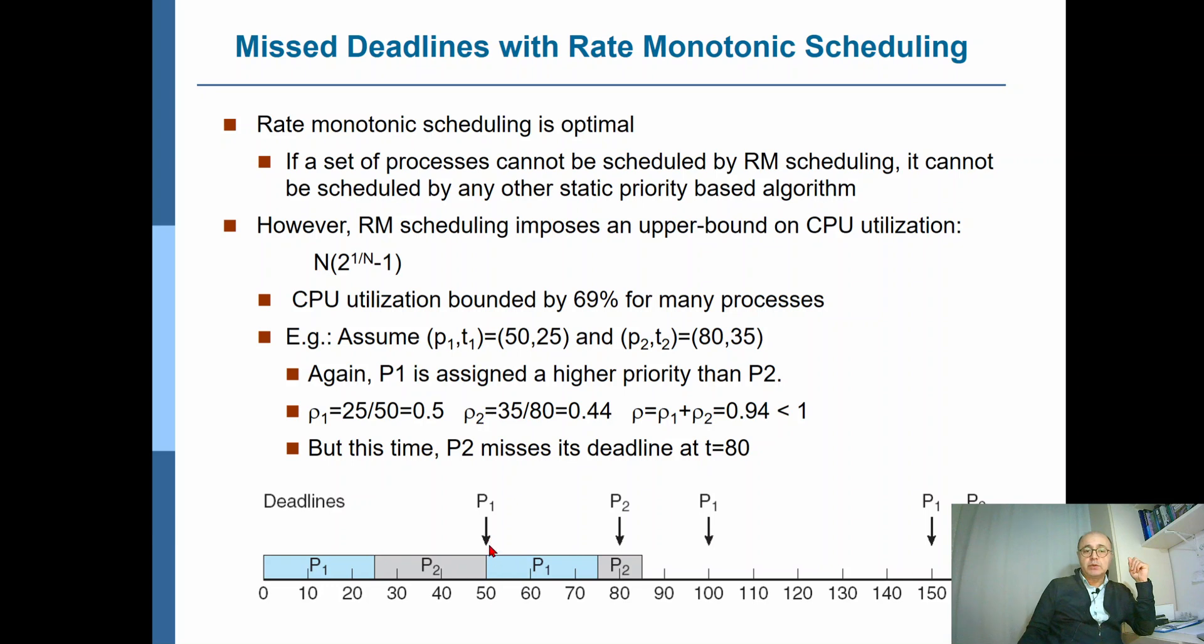And at T equals 50, it will be preempted for P1. Again, P1 executes for 25 milliseconds. These 10 milliseconds remaining from here will be used here after P1 completes.